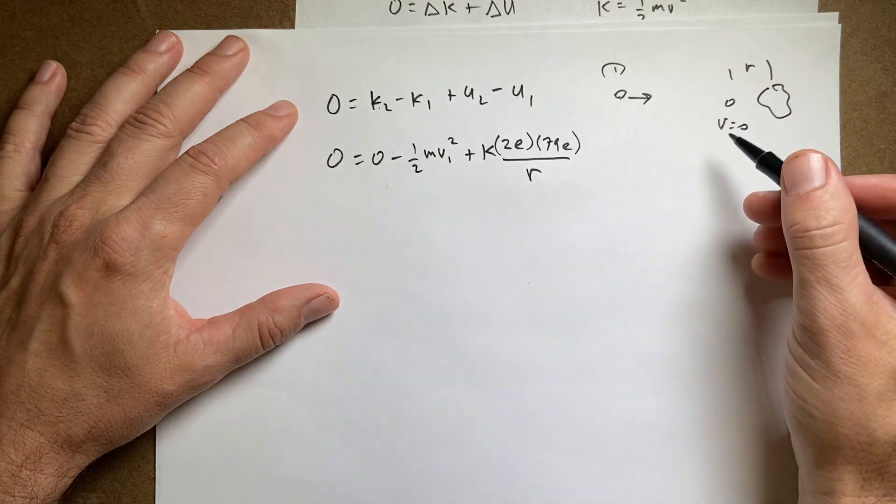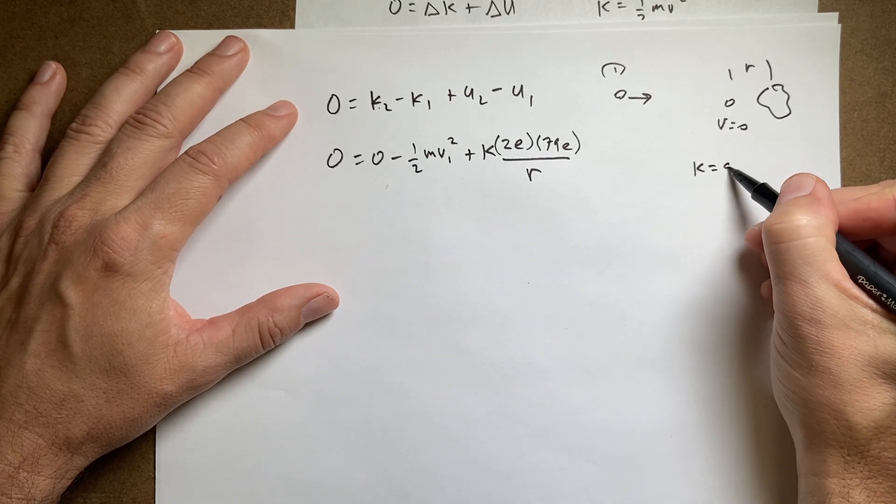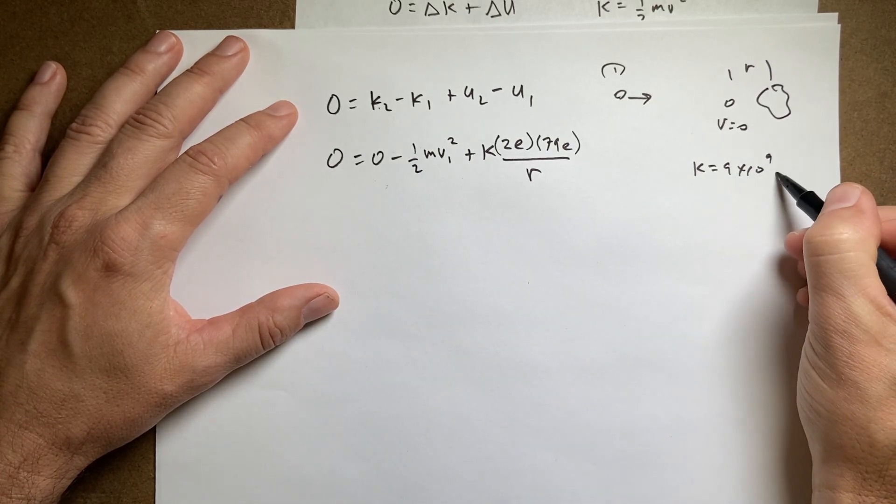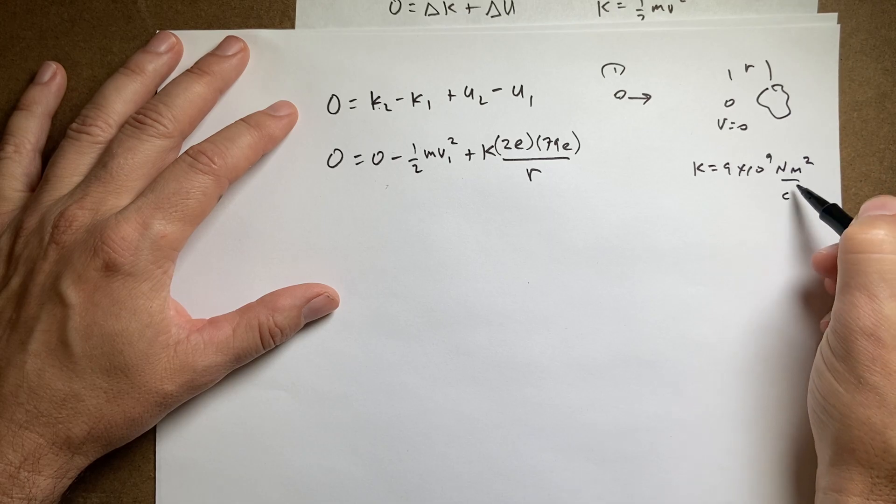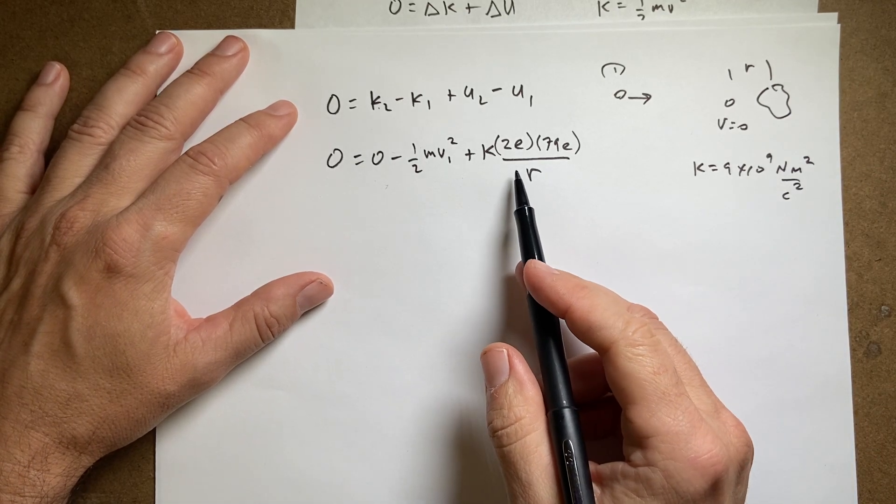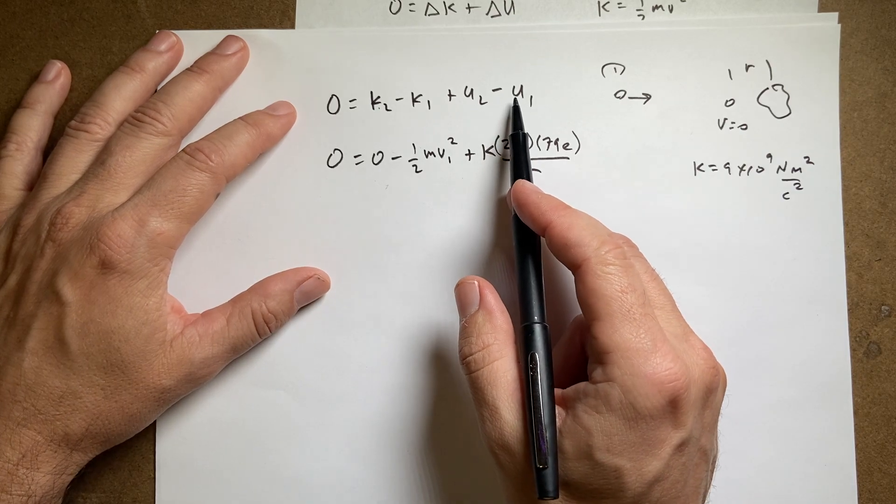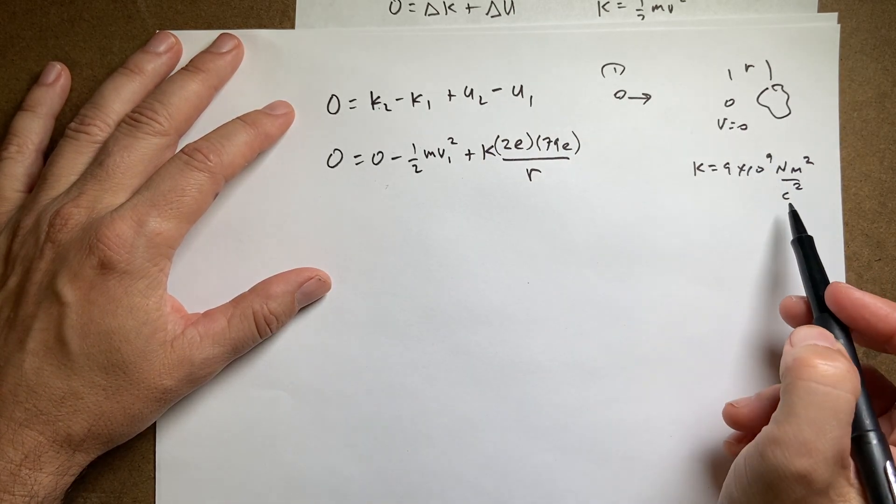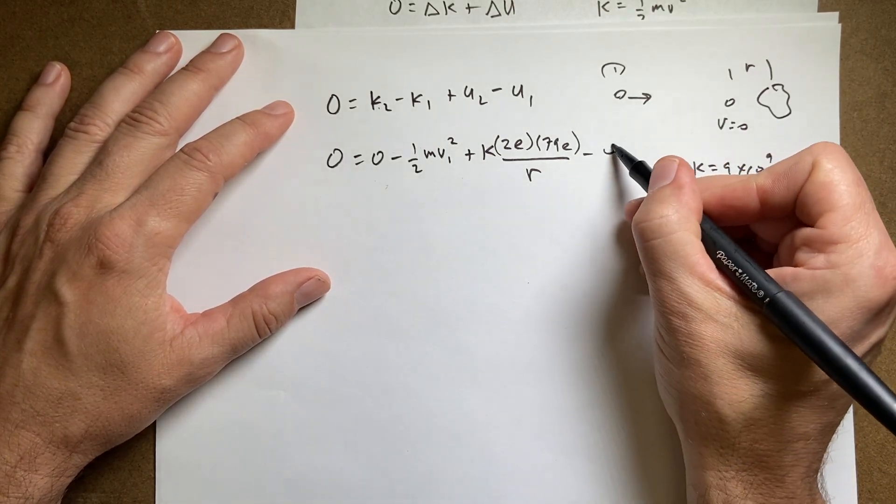And remember k is the coulomb constant. k equals 9 times 10 to the 9th newton meters squared per coulomb squared. And I don't know r. Now the initial potential when it's far away, r is really big so it's going to be zero. So it's just minus zero. So that's all I need to do is solve this for r.